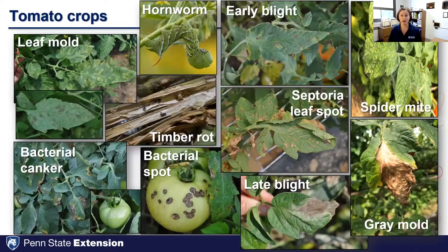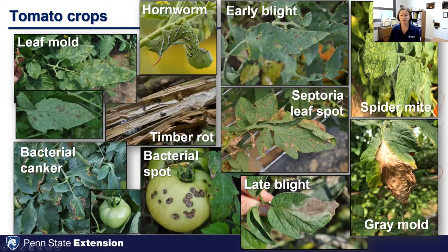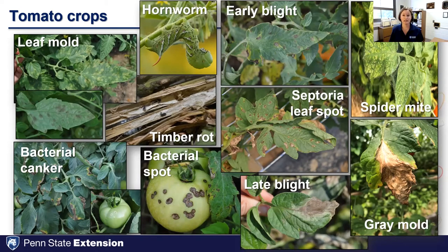I have a couple of slides showing pictures of common diseases and insect pests. For tomato, we have leaf mold — typically seen more in a high tunnel than in the field. We always seem to have issues with bacterial diseases, whether bacterial canker or bacterial spot. Late blight was a big concern in 2009–2010 but hasn't had many outbreaks in recent years. Common summer foliar diseases on tomato include early blight and septoria leaf spot, which start on lower plant parts and work their way up, causing significant defoliation.